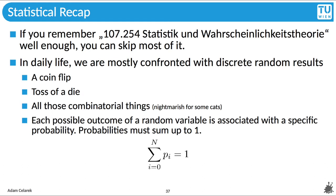If you remember statistics pretty well at TU Wien, that would be the bachelor course Statistik und Wahrscheinlichkeitstheorie, you can skip most of it. Otherwise, fear not, the cat is with you. In daily life, we mostly see discrete randomness. For instance, a coin flip, toss of a die, the casino. You probably remember that there is a set of possible outcomes, each with a certain probability, and probabilities sum up to one.